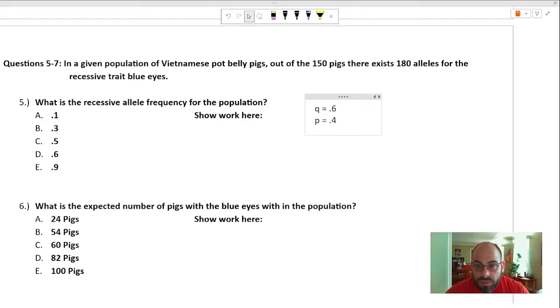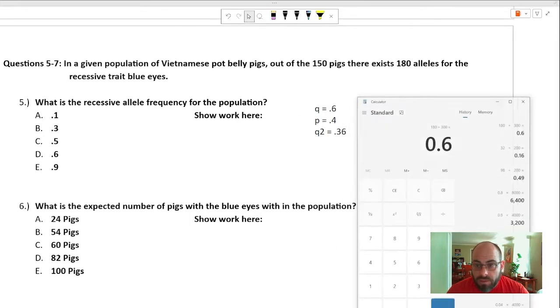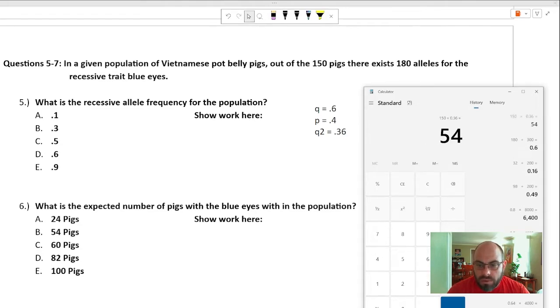What is the recessive allele frequency of the population here? Well, that's q. .6, D is the correct answer. What is the expected number of pigs with blue eyes? It's getting crazy. Well, there's 150 pigs. And the individuals that have blue eyes are going to be homozygous recessive for that trait. And so that homozygous recessive percentage is q squared, which is .6 times .6, which is .36. So q squared is equal to .36. And if 36% of the population have blue eyes and there are 150 total pigs, then we just need some math. And that's 150 times .36, and that's going to be 54. B is the correct answer for number six.